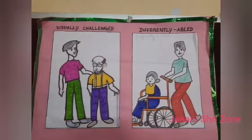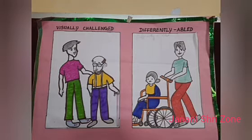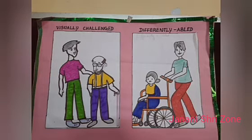Ok children, now see this picture. Who are they? Yes, they are differently abled persons. As you know, some people lack the ability to use any one or more senses. Such people are called differently abled people. So we have to help those people when we see them.